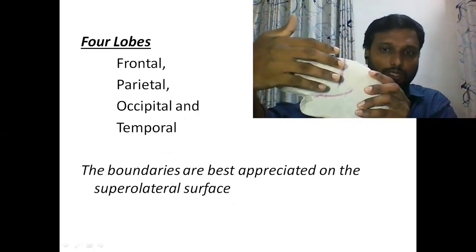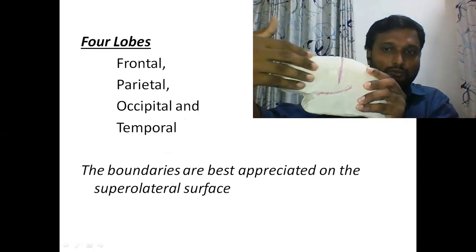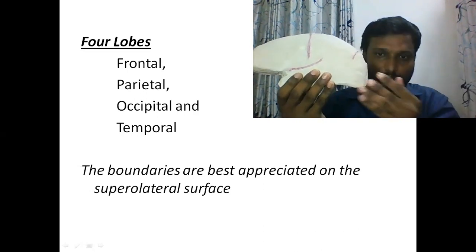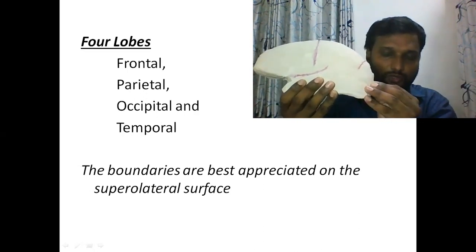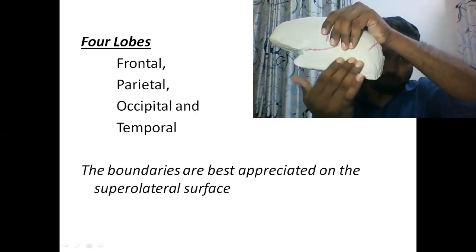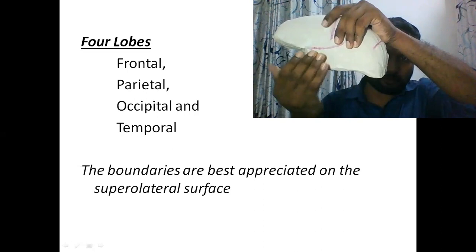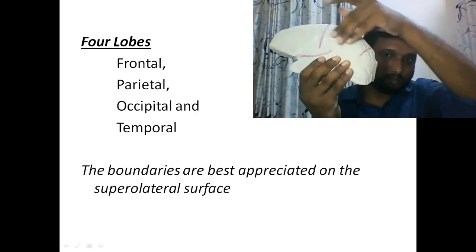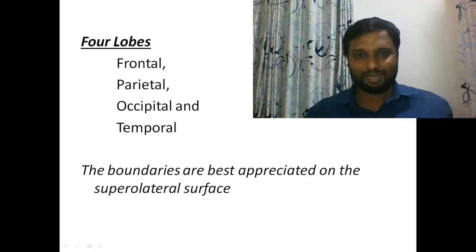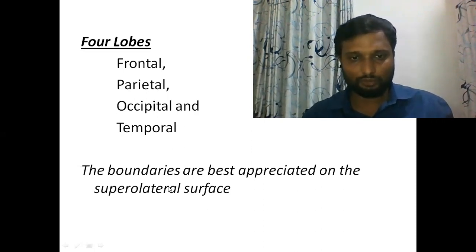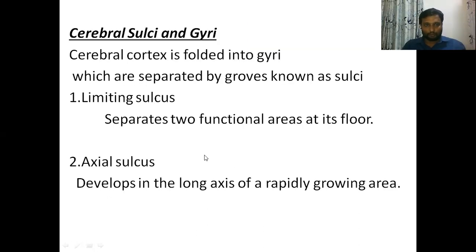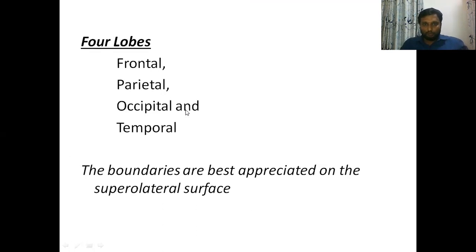Looking at the model: this area is the frontal lobe; this area is the parietal lobe; this posterior part is the occipital lobe; and inferiorly this area is the temporal lobe. The boundaries of these four lobes are clearly seen only on the supralateral surface.